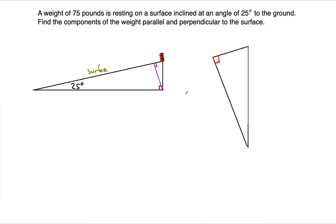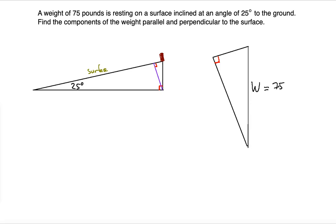The weight being discussed — 75 pounds — is always going to be perpendicular to the ground level. The weight is coming straight down. It's the force exerted by the object on the inclined surface and it's always going to be vertical, pointing down. So this is the weight vector, which is equal to 75 pounds.